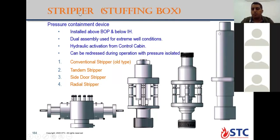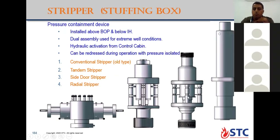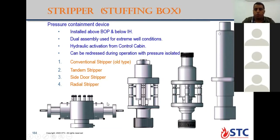There are several types for the stripper assembly. Number one is the conventional stripper — an older type no longer commonly used. Numbers two and three are the same: tandem or side door stripper — this is the most common type used during operation. Number four is radial stripper, like a ram for the BOP. Which type do you use? We use all side door strippers only. We initially used to use radial stripper but no longer. Conventional is old type and no longer used. We are using side door — two strippers up and down.